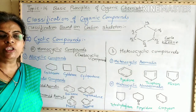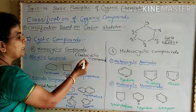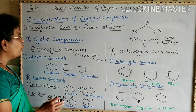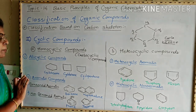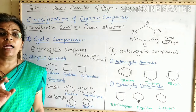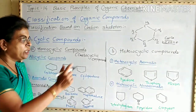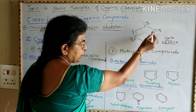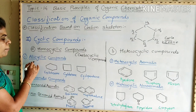Homocyclic compounds are compounds in which ring formation takes place with the help of only carbon atoms. These compounds are also named as carbocyclic compounds — that is, the ring is formed by carbon atoms. These homocyclic compounds are further classified into alicyclic compounds and aromatic compounds. Alicyclic compounds are those in which the ring is formed by carbon-carbon single bonds only.